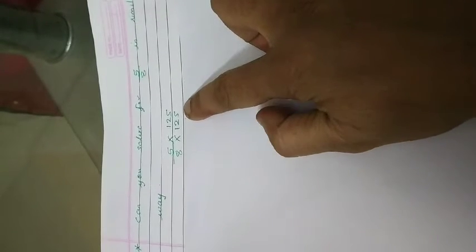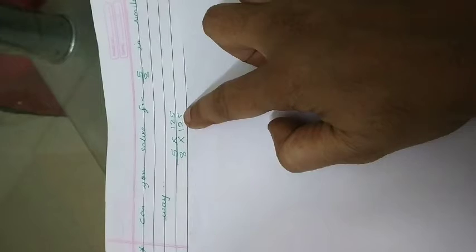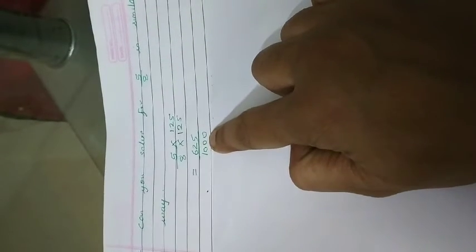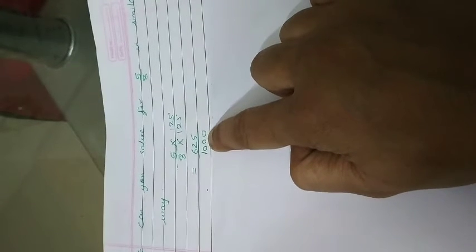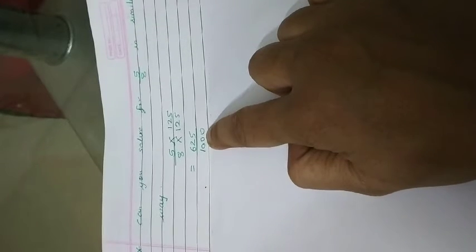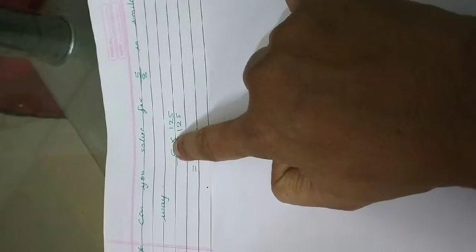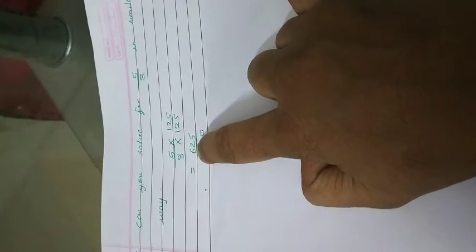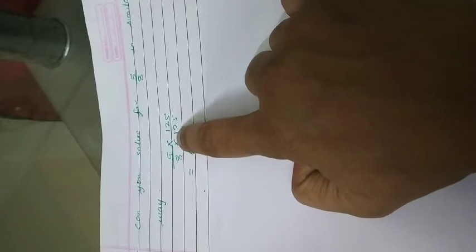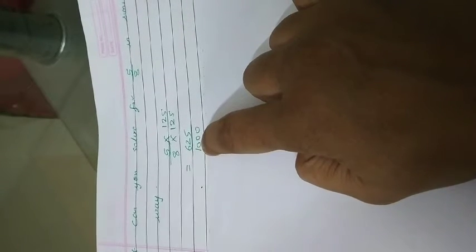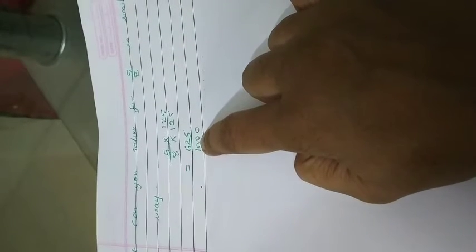So, if we multiply 8 by 125, you can see that we will get in denominator 1000. As we are multiplying 125 to denominator in same way, we need to do for numerator. That is for 5. So, 5 multiplied by 125 is 625 and 8 multiplied by 125 becomes 1000. Now, we can convert this easily into decimals. What will be the answer?